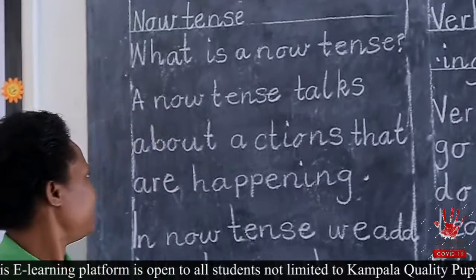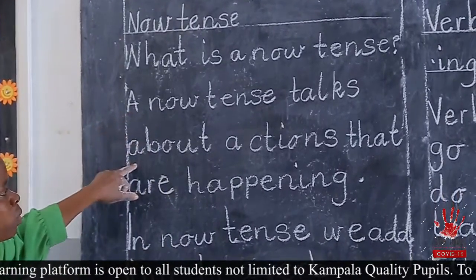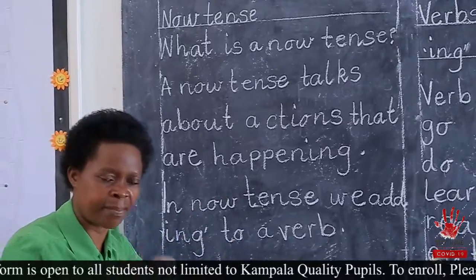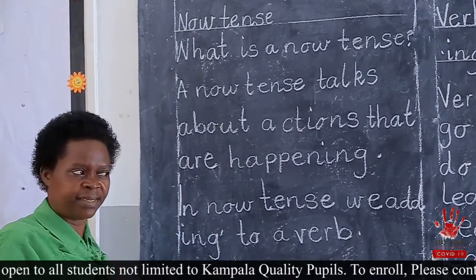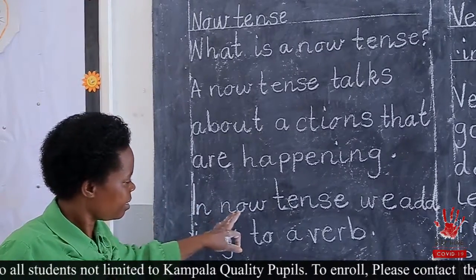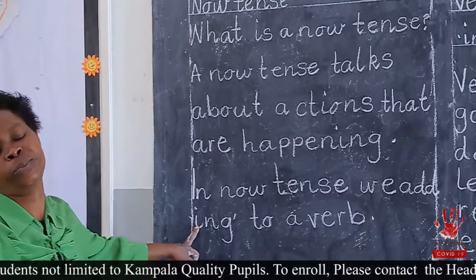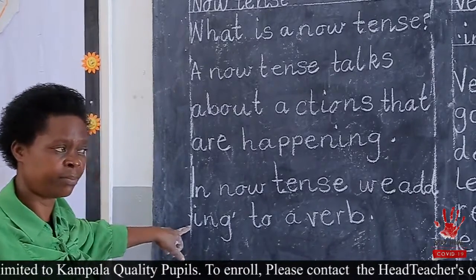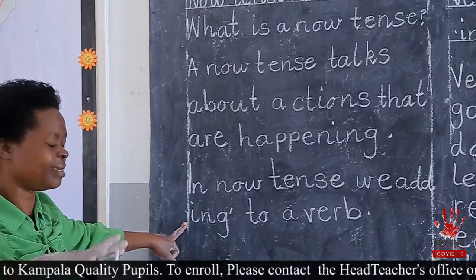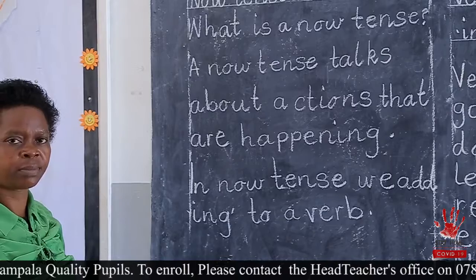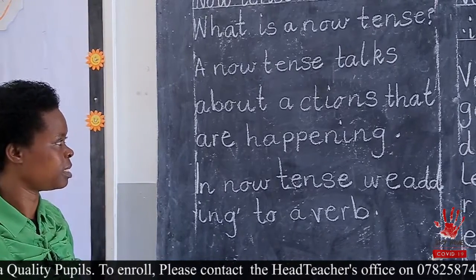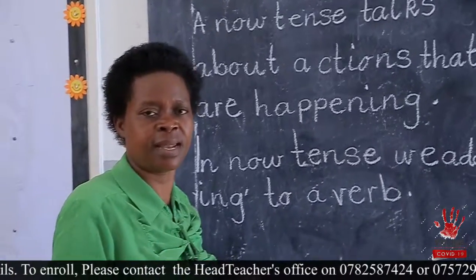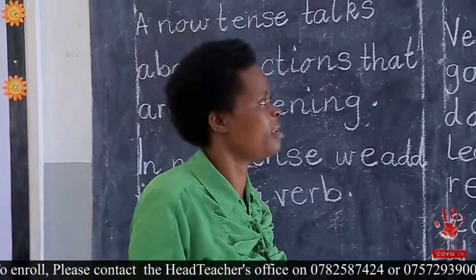On the board, I have it. Now tense talks about actions that are happening — like what you are doing right now. It is in a now tense. In a now tense, we add I-N-G. So when we are talking about now tense, we are going to add I-N-G to the verbs that we have been learning. There are those verbs that need to be added directly.